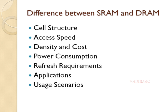In summary, SRAM and DRAM have distinct advantages and disadvantages that make them suitable for different applications. SRAM offers faster access time but higher cost and power consumption, while DRAM provides higher density, lower cost, and better efficiency at the expense of slightly slower access speed and the need for refreshing. The choice between SRAM and DRAM depends on the specific requirements of the digital design and the intended application.